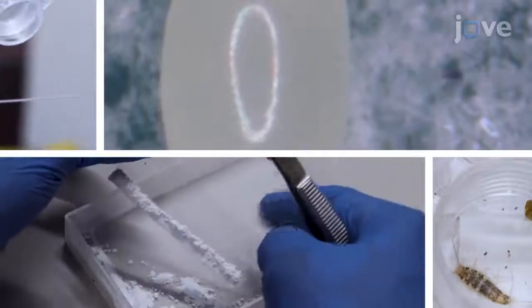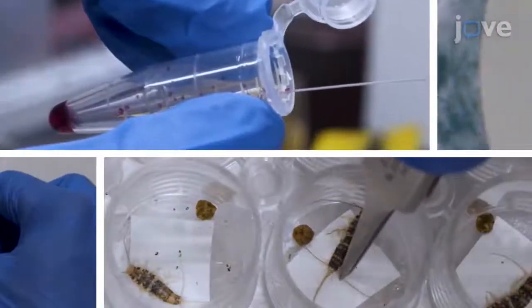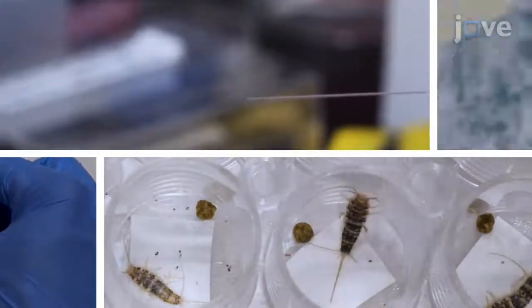This protocol covers basic techniques from culture maintenance to egg microinjection to implement Thermobia as a laboratory model species. This method can also be used for application of other genetic tools such as RNA-mediated gene knockdown and transgenesis in Thermobia.